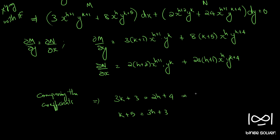Simplifying the first equation gives 2h minus 3k plus 1 equal to 0. Simplifying the second equation gives 3h minus k minus 2 equal to 0.